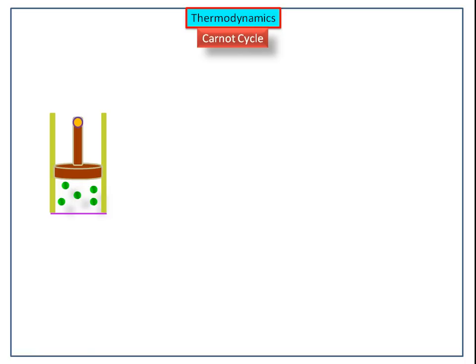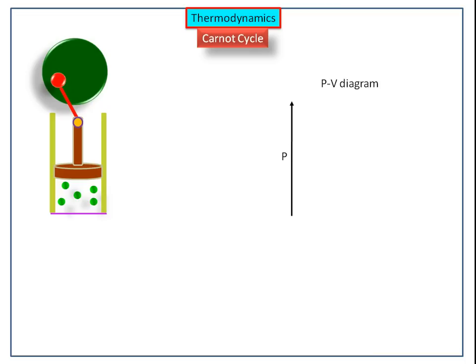Now we see the details of the Carnot cycle. Let us consider a cylinder having a frictionless piston that contains N number of gas molecules. It is important to keep in mind that the Carnot cycle is reversible — that is, at every point defined in the PV diagram, the system is at equilibrium. This is the initial position of the gas, represented as 1, with initial pressure P1 and initial volume V1.